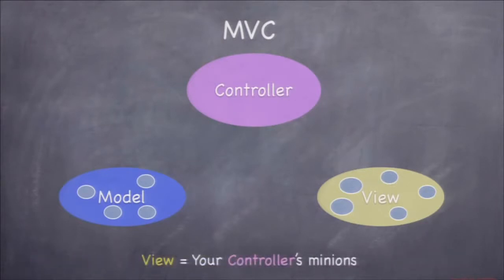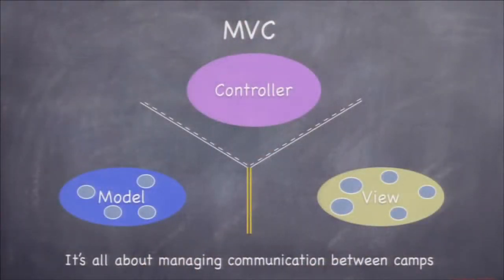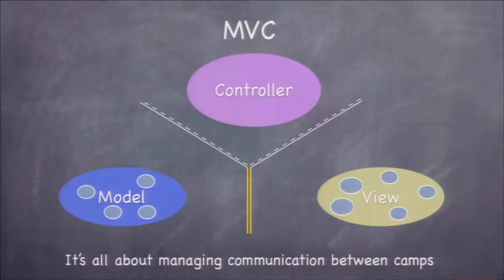The stuff in the view is pretty generic UI elements. The stuff in the controller is very specific to how your UI works, and the stuff in the model is completely independent of how your UI works. Doing MVC right is about knowing where things go, but also how to communicate between these three camps. I've used road markings to represent this — a double yellow line and a dashed white line — like you're driving in your car — to show where communication is allowed or not.